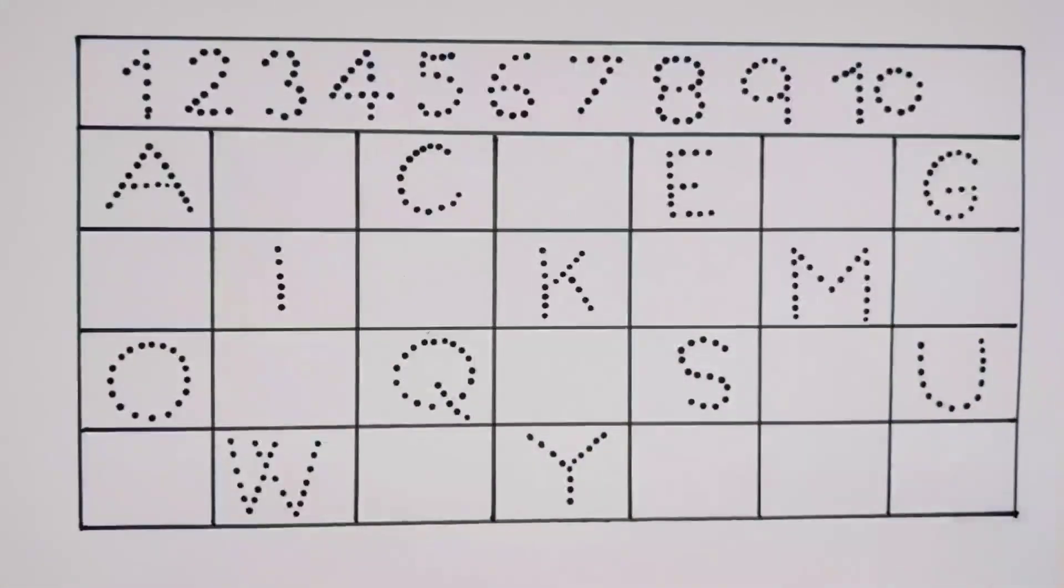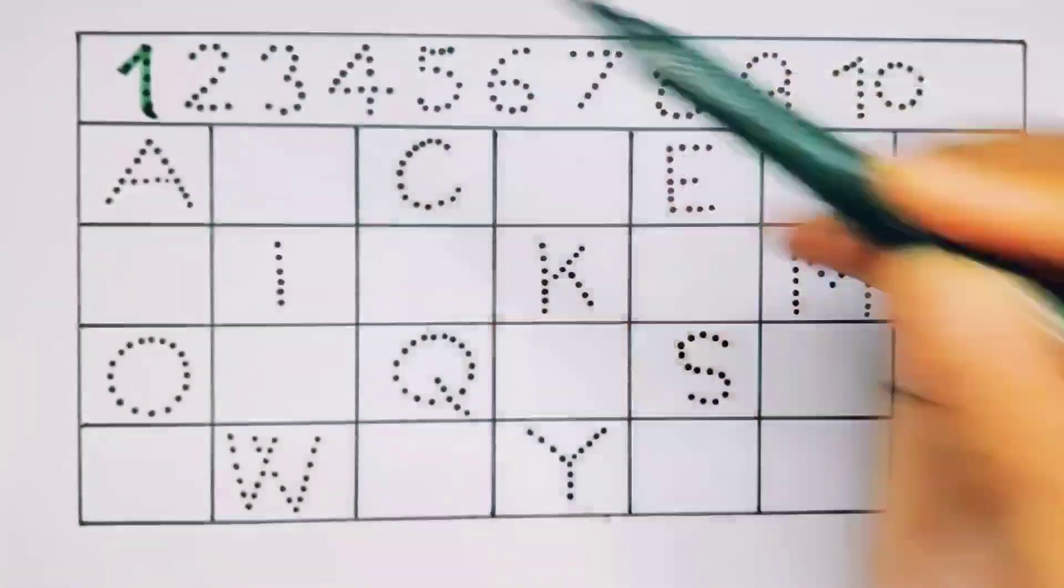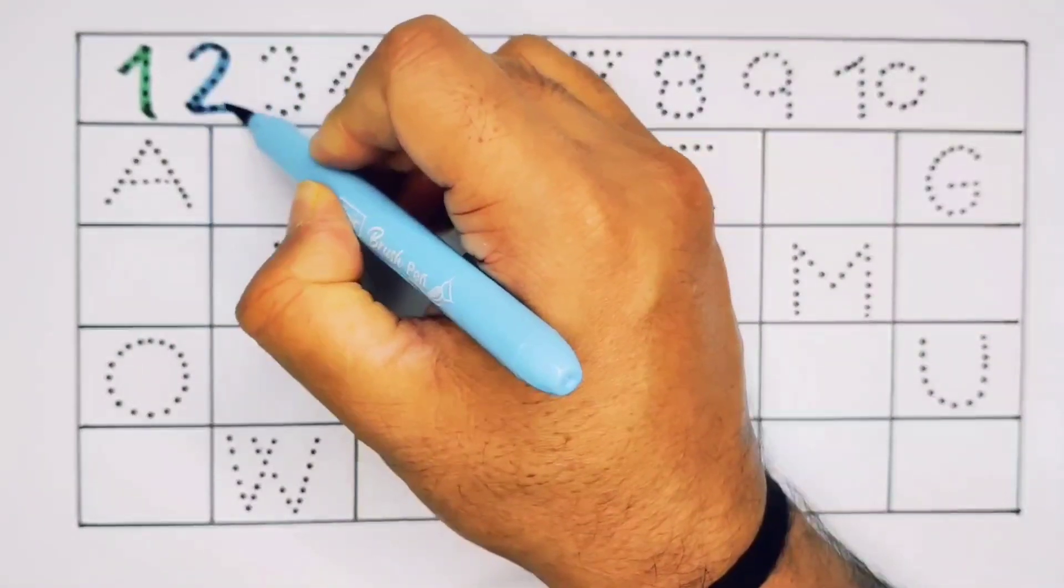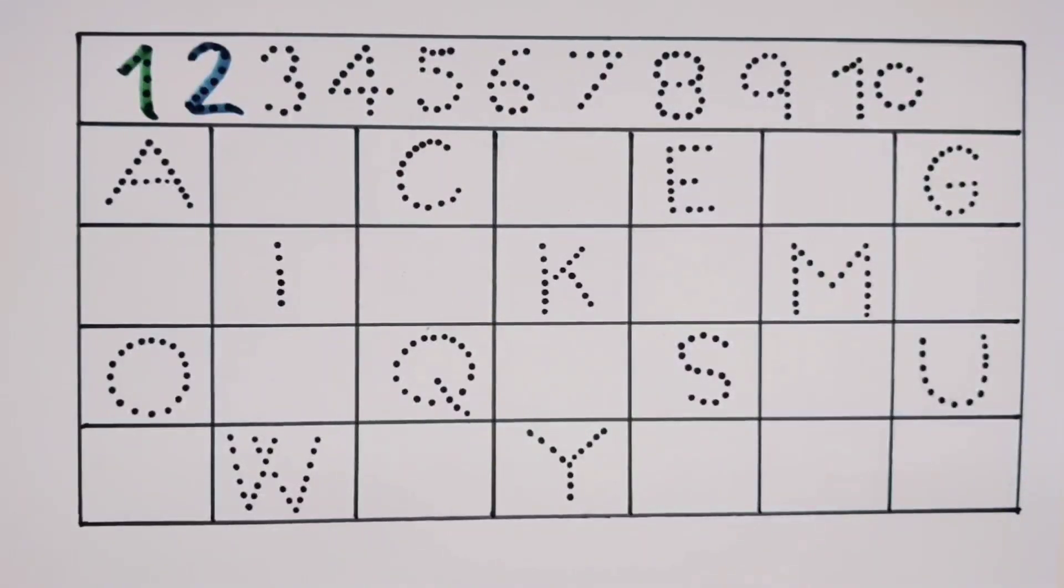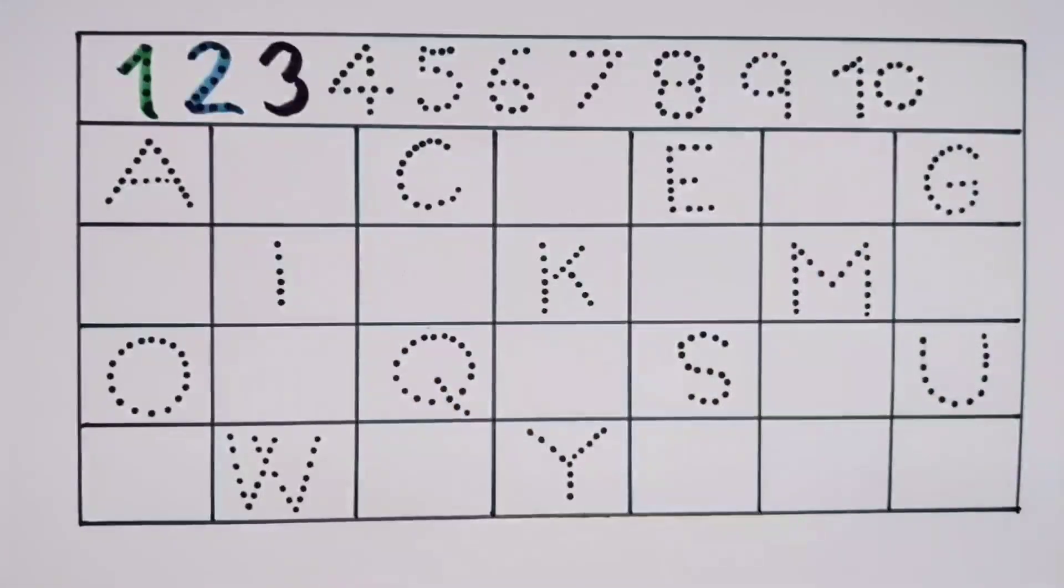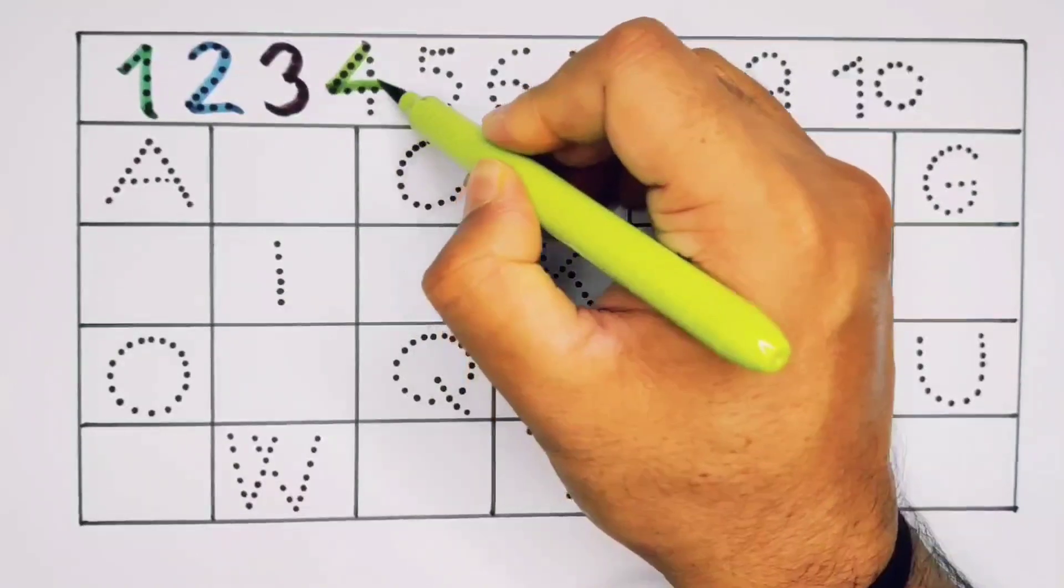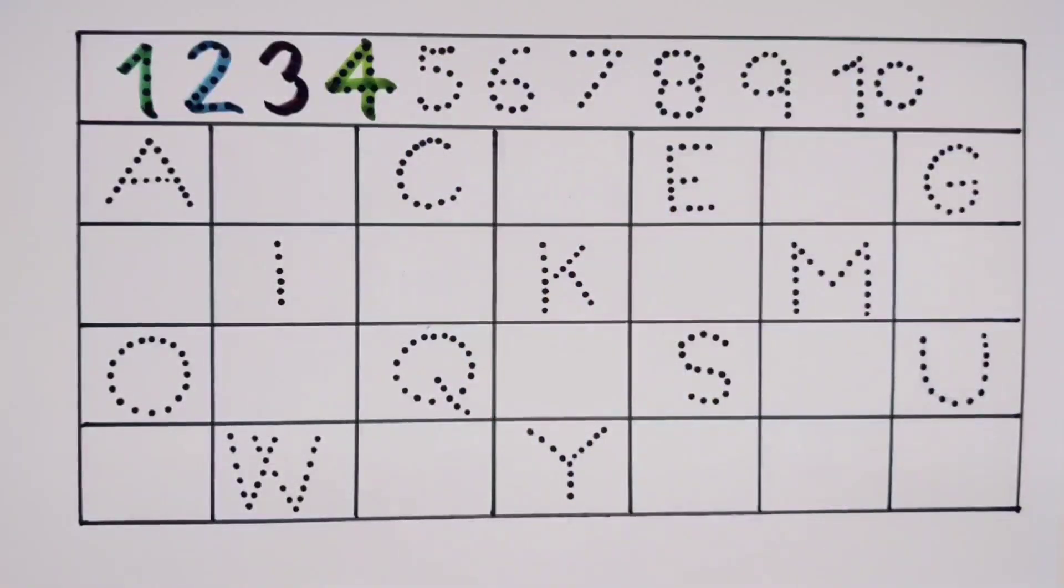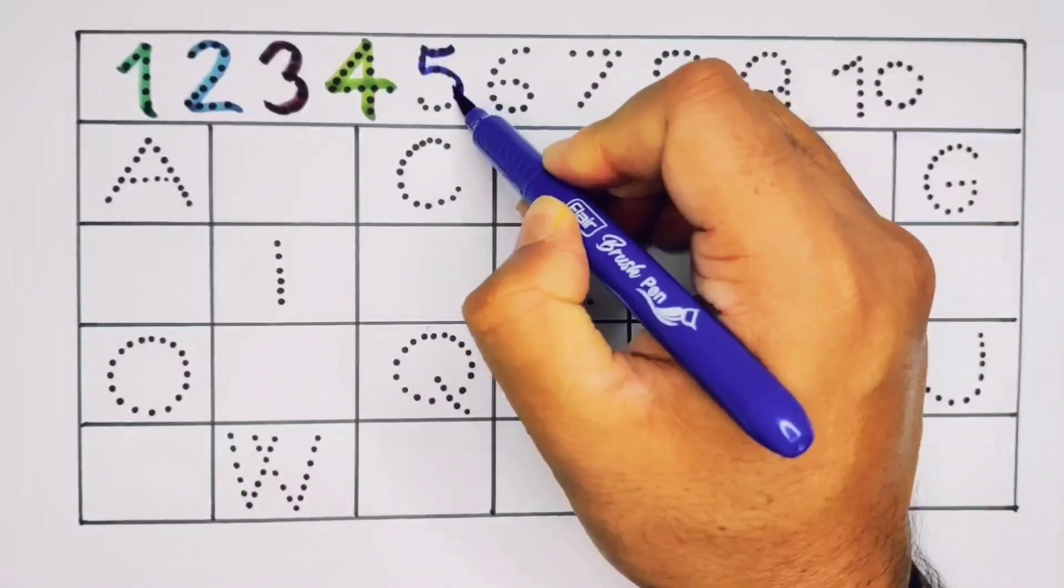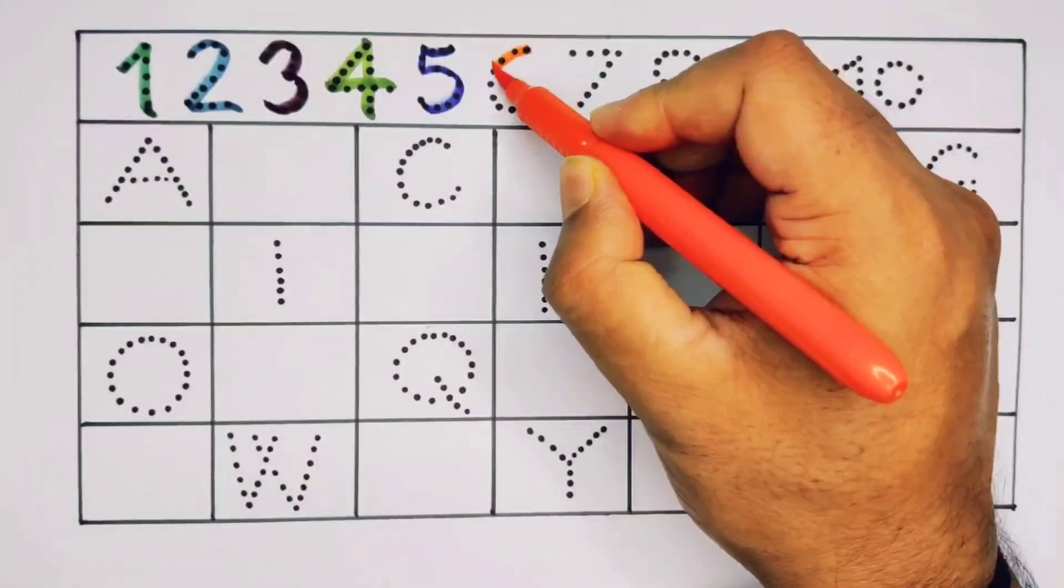One, number one. Two, number two. Three, number three. Four, number four.